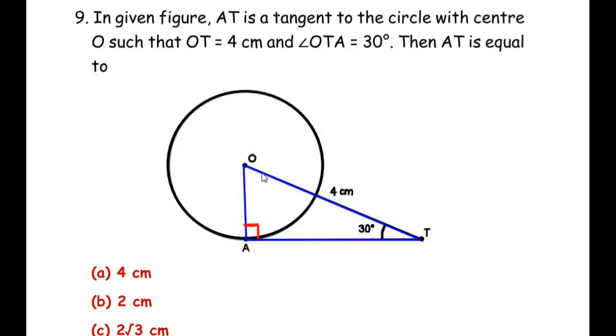Now let us find out which is the opposite side, hypotenuse and adjacent side. So opposite to angle 30, which is the angle of concern, is your opposite side. So OA becomes the opposite side. And we know that the side opposite to the 90 degree is always hypotenuse. So 4 cm becomes the hypotenuse. And the remaining side, AT, becomes the adjacent side.